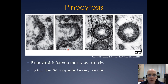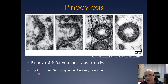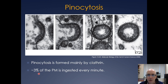Pinocytosis involves clathrin-coated vesicles taking up material. You can see in time-lapse microscopy the vesicle start to invaginate, invaginate more, then pinch off. A cool fact: three percent of the plasma membrane is ingested every minute. Just take that in and think about how dynamic this whole process is — the post-Golgi transport and the secretory pathway in general.